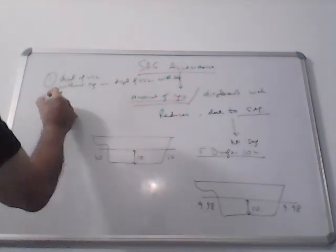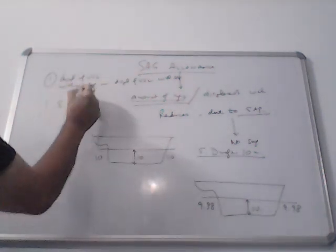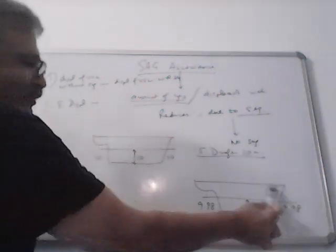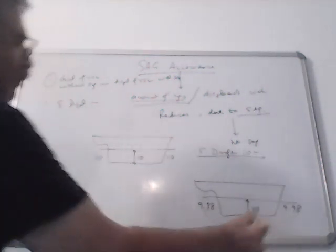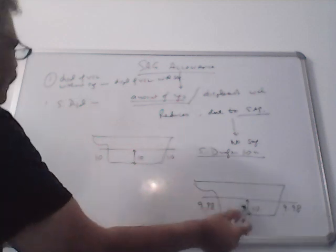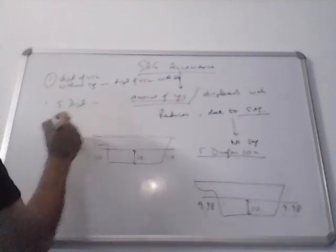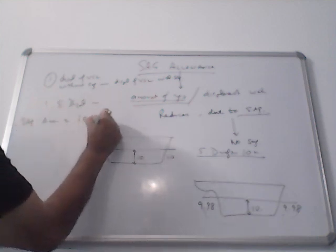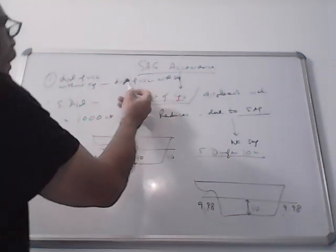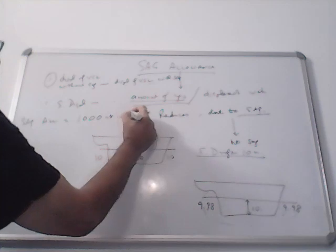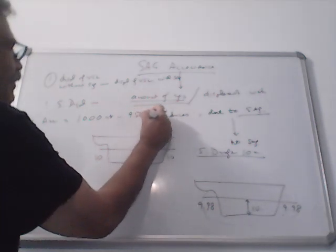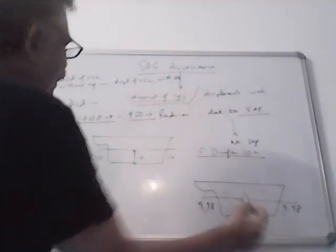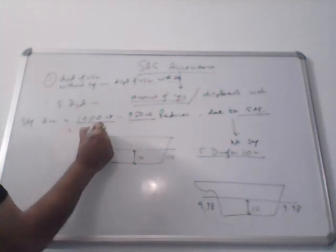So in this case, displacement of vessel without SAIC will be the summer displacement minus displacement of vessel with SAIC. You have to calculate the displacement of vessel which will be slightly less than summer displacement. So SAIC allowance equals summer displacement, let's say 1000 metric tons, minus displacement in this condition, which could be 950 metric tons. So the answer will be 50 metric tons.